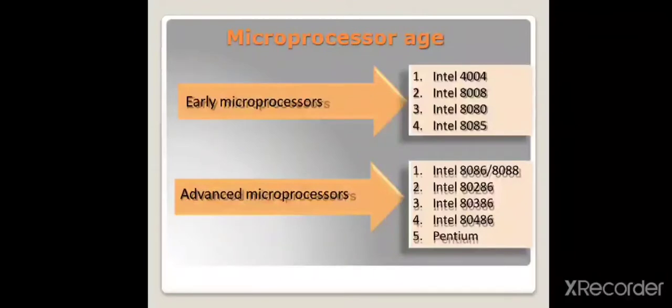After this came the age of microprocessors. Depending on how they were developed, we can divide microprocessors into two ages: early microprocessor age and advanced microprocessor age.